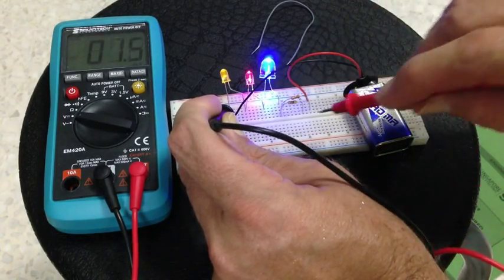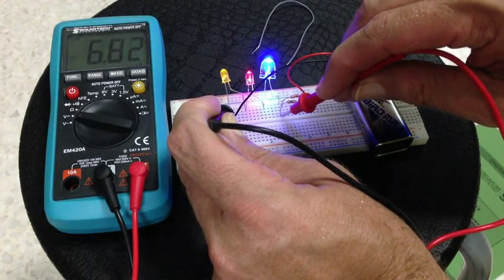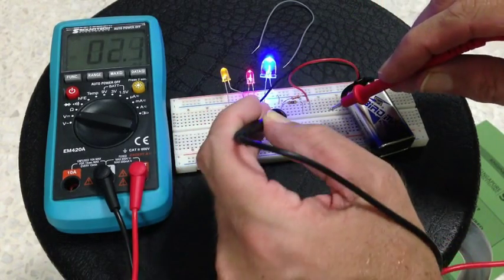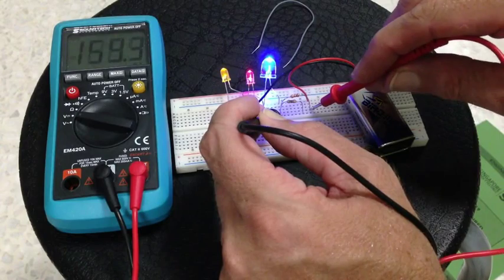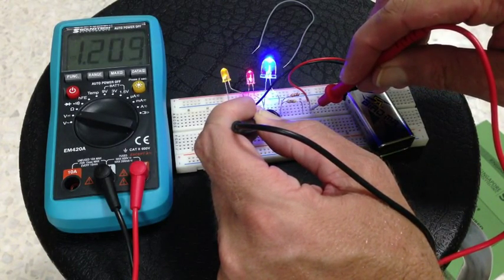Going to the other side of the resistor, it's now 6.82 volts. So what happens is the resistor is soaking up 1.21 volts.